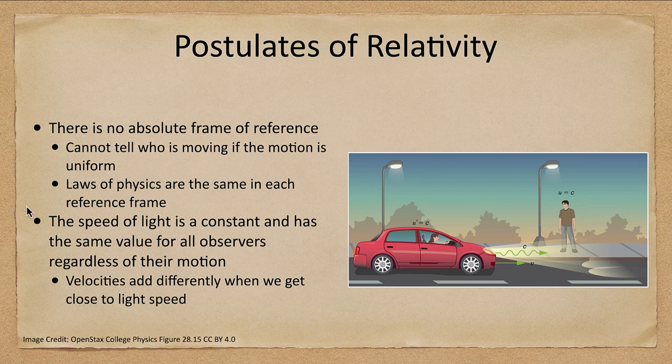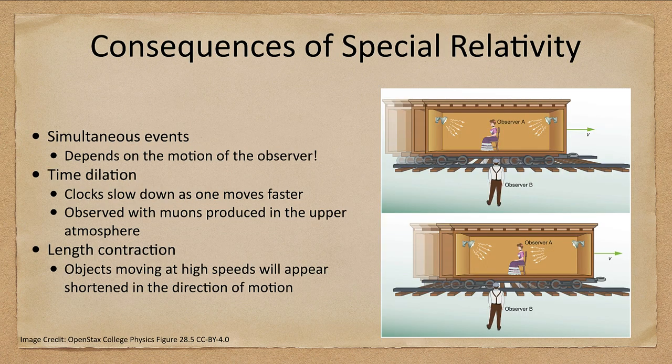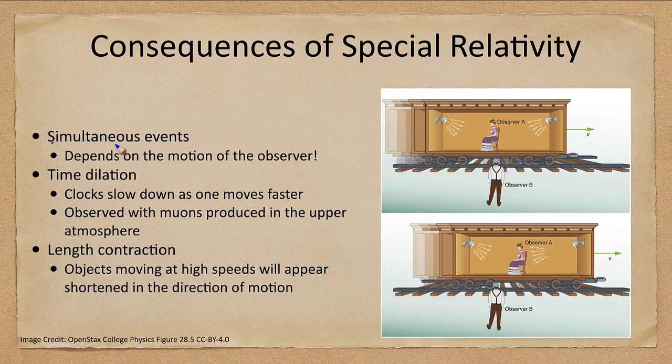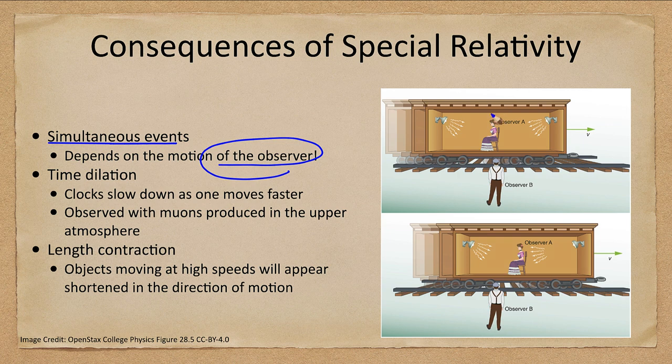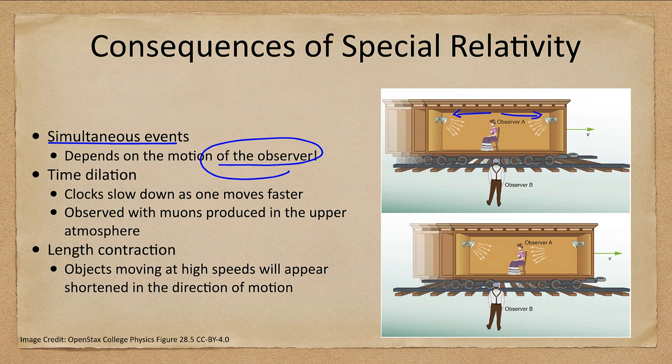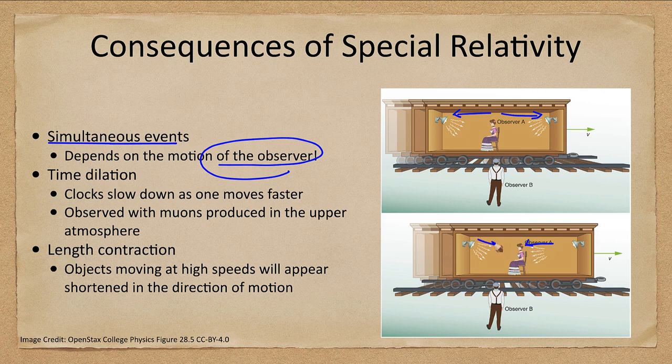Some consequences of special relativity: simultaneous events depend on the observer. Observer A may see two flashes occurring simultaneously, but that doesn't mean there is true simultaneity. For observer B, one light will reach her first and the other will reach later.